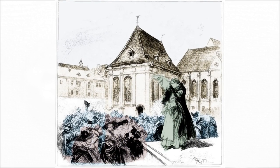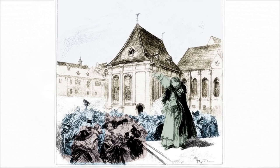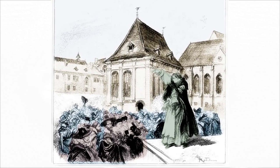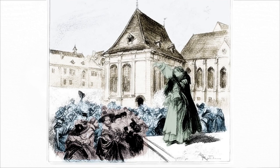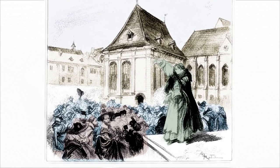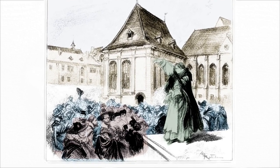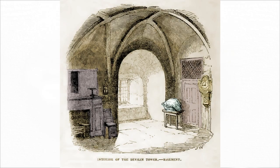Osbaldiston was sentenced to pay a still heavier fine, to be deprived of all his benefices, to be imprisoned and make submission, and moreover to stand in the pillory before his school in Dean's Yard with his ears nailed to it. This man had the good fortune to conceal himself, but the Bishop of Lincoln, refusing to make the required apology, lay about three years in the Tower, till released at the beginning of the Long Parliament.